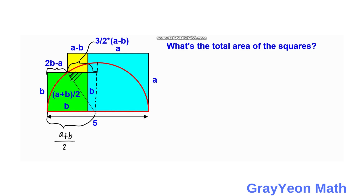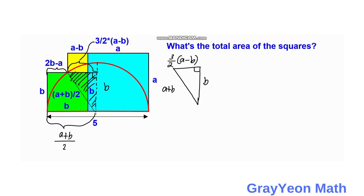Next, we isolate this triangle. It is actually a right triangle. The sides are: b, (3/2)(a minus b), and the hypotenuse (a + b)/2. By the Pythagorean theorem, ((a + b)/2)² equals ((3/2)(a minus b))² plus b².